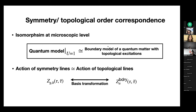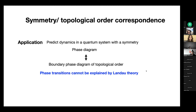Now let me move on to talk about how we can use this correspondence to predict dynamics in a quantum system with symmetry. As condensed matter physicists, we care most about the phase diagram imposed by the symmetry. To solve this, I'll first derive the boundary phase diagram of topological orders, then use that to infer the phase diagram in systems with symmetries. In particular, I will apply this to cases where there are phase transitions that cannot be explained by Landau theories.